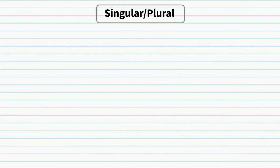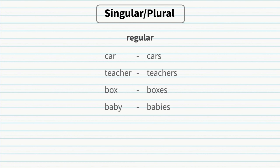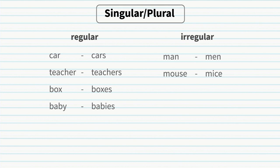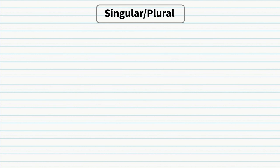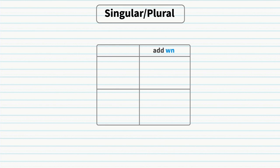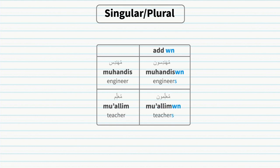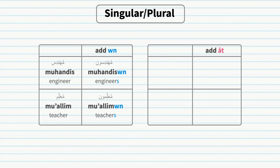Singular and plural: in English some nouns are made plural by adding -s, -es, or -ies (car/cars, teacher/teachers, box/boxes, baby/babies). These are regular or 'sound' nouns. There are also irregular nouns like man/men, mouse/mice, child/children. In Arabic there are also sound (regular) plurals and broken (irregular) plurals. For masculine sound plurals, add -un to the end — e.g., muhandis/muhandisun. For feminine sound plurals, add -at and remove the ta marbuta — e.g., muhandisa/muhandisat, muallima/muallimat.